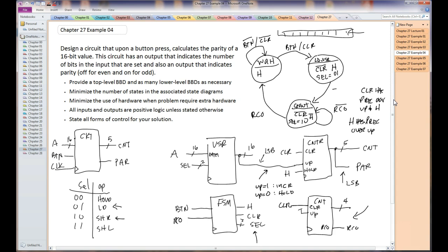Last thing we need to do here is state the forms of control. Essentially, we have a state machine that's controlling everything. You can argue this up here as internal control since it's hardwired. So we'll say internal control. At that point, I think we are completely done.